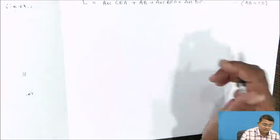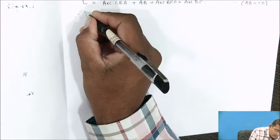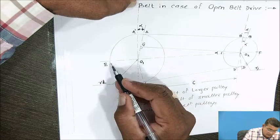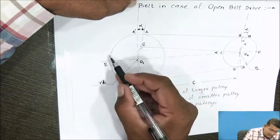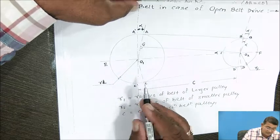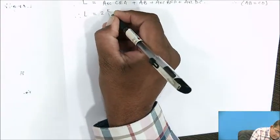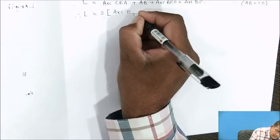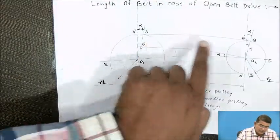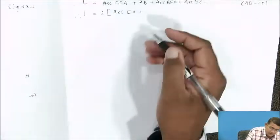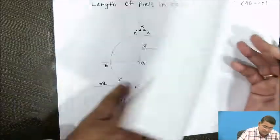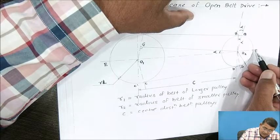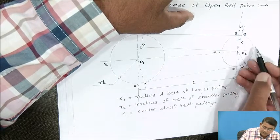Since AB = CD, we can simplify. Arc CEA equals two times arc EA. So total length L = 2 × arc EA + 2 × AB + 2 × arc BF. Arc EA has the angle (π/2 + α), where α is the angle we need to define.